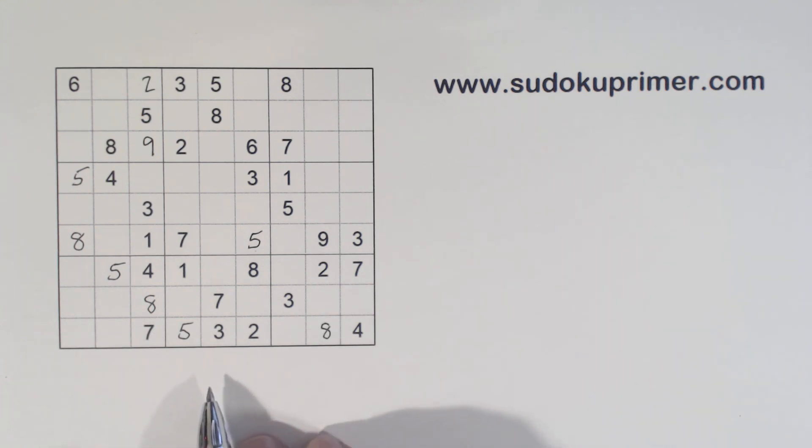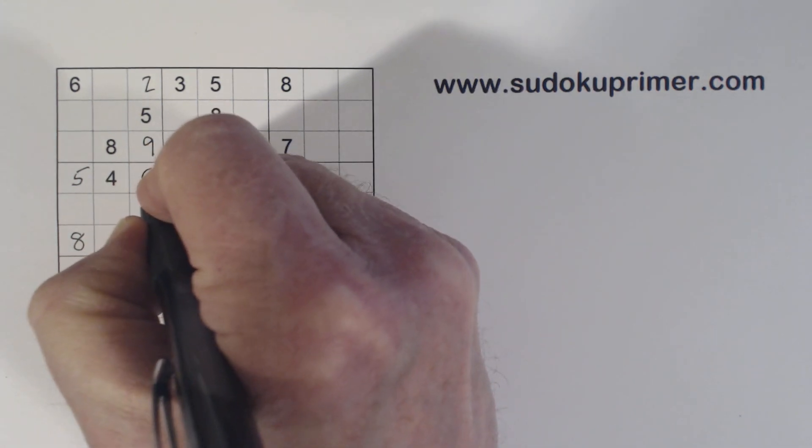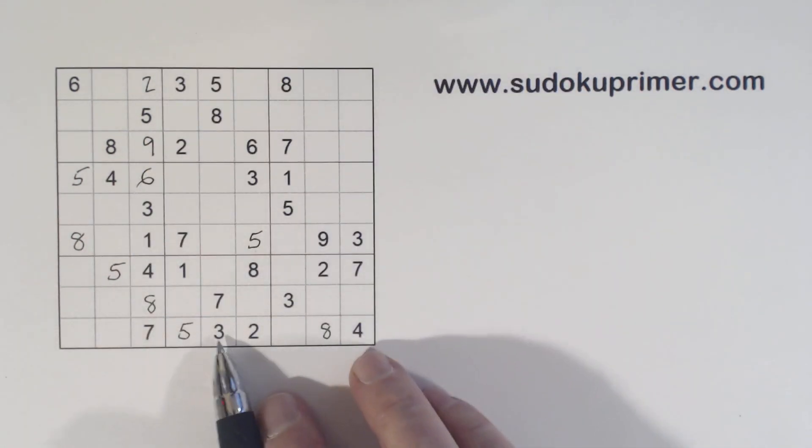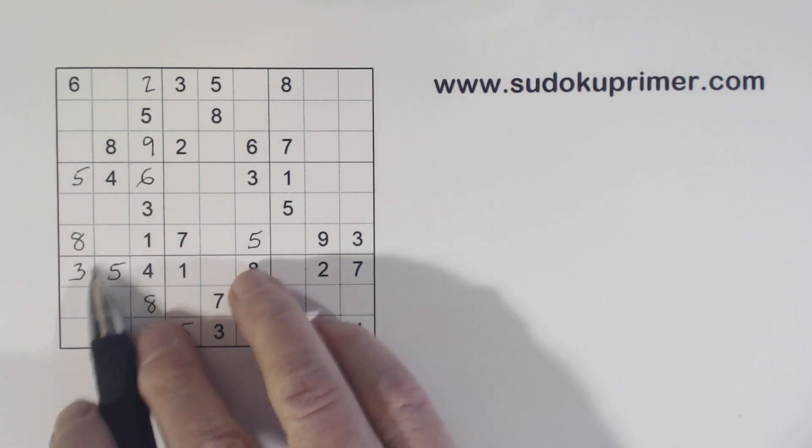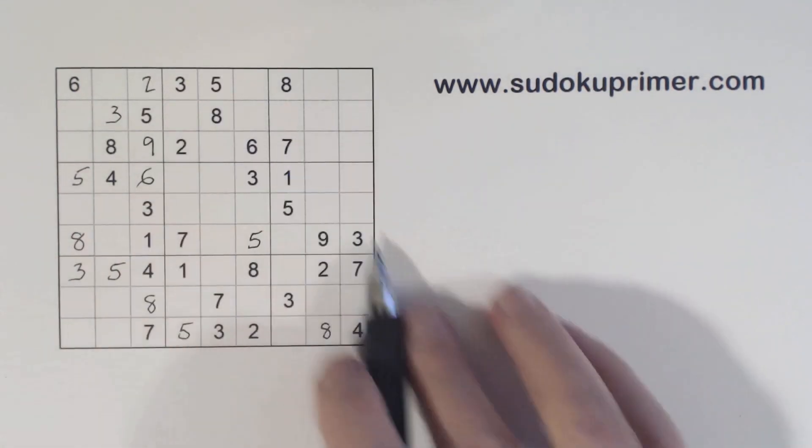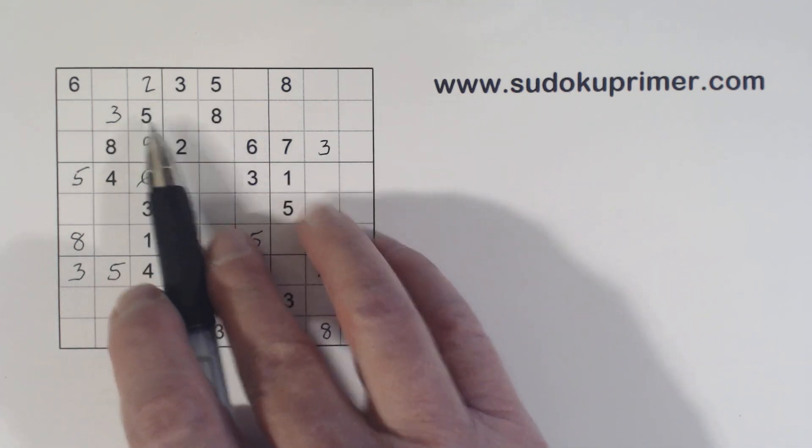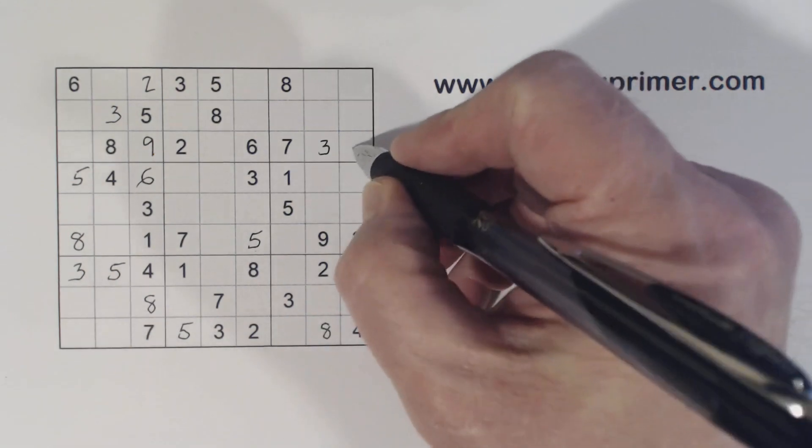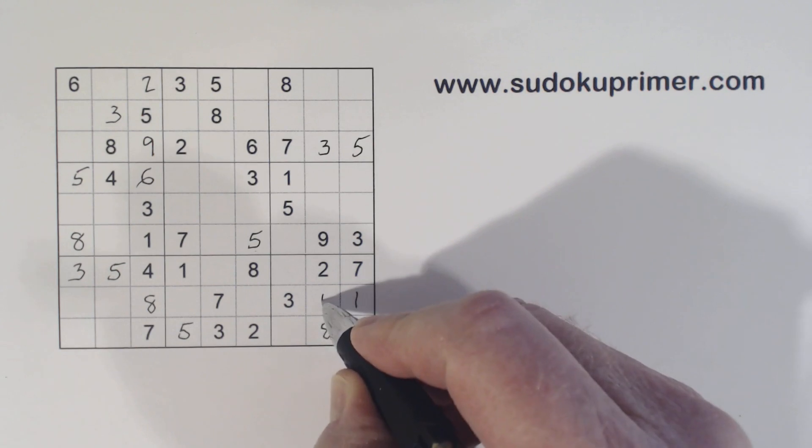And now we can put, let's see, there's a 6 there, only number left in that column, so that's easy. Now we've got a 3 there. 3, 3, 3 right there. All right, and now, let's see, we've got a 5 here, 5 here. A 5 goes right there. Now we can solve the 1, 5 twins we found there.